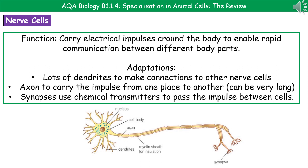We've also got the synapse, which is the nerve ending at the very end of the cell. We need a method of communicating from the end of our nerve cell to the next cell, whether it be another nerve cell or a muscle. What we have here are chemical transmitters contained within little vesicles. As the impulse reaches the end, it signals those chemicals to be released, allowing the impulse to travel between the cells.